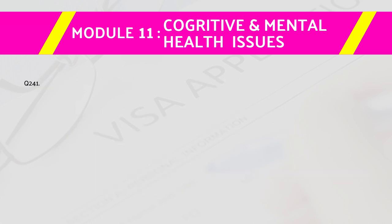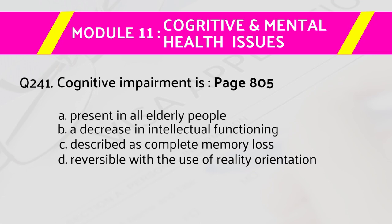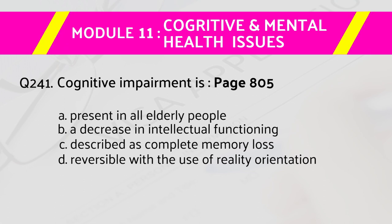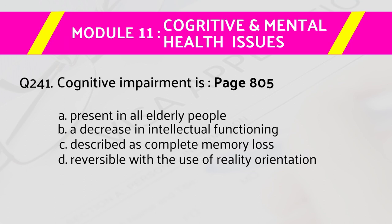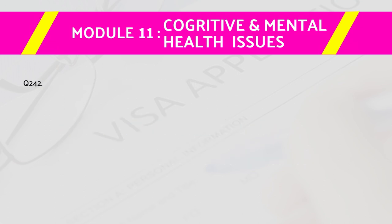Question number 241: Cognitive impairment is — page number 805. Answers are: a) present in all elderly people, b) a decrease in intellectual functioning, c) described as complete memory loss, d) reversible with the use of reality orientation. The right answer is b) a decrease in intellectual functioning.